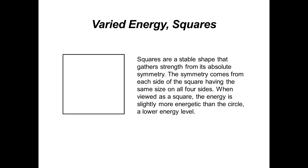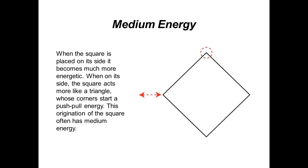Squares have varied energy levels depending on their orientation. Squares are considered a stable shape; they gather their strength from their absolute symmetry — for example, two inches on all four sides. When viewing a square in its standard orientation, the energy is slightly more energetic than a circle but still relatively low. When you turn the square onto its side, you start getting energy off the corners and it becomes more energetic, acting more like a triangle whose corners create a push-pull. This orientation of the square has a medium energy.